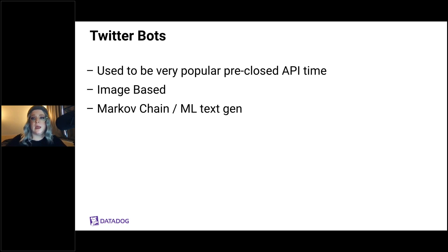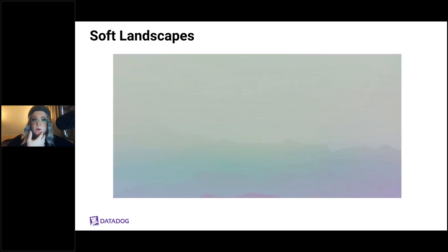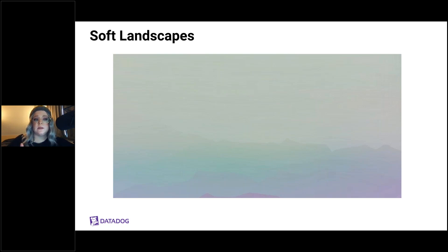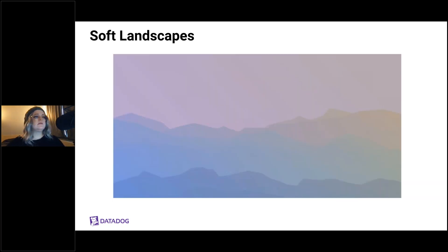The first Twitter bot I want to tell you about is called Softlandscapes, an image bot made by @v21 on Twitter. It uses something called Tracery, a tool to generate language and text. Bot developers realized they could use its structure to replace elements within SVG, enabling a lot of flexibility when creating generative images. About four times a day, the bot tweets out soft landscapes as SVG files with various gradient colors.